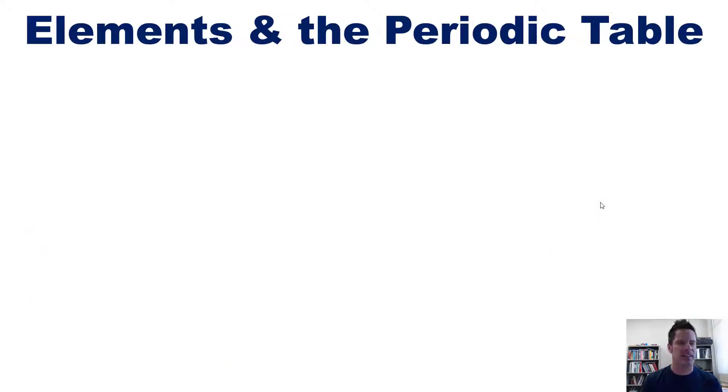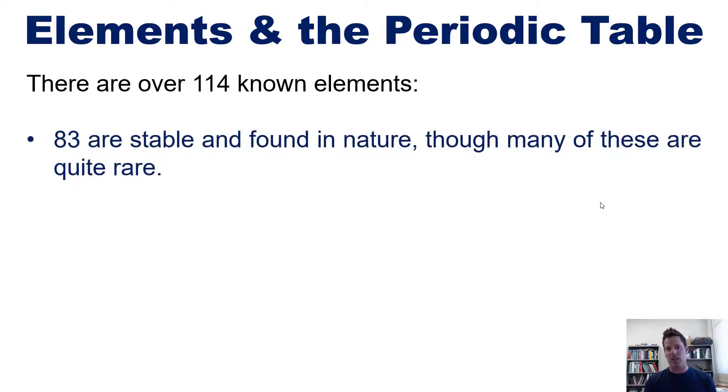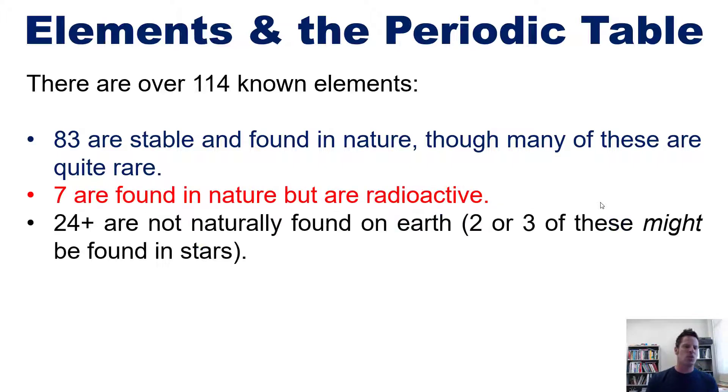Beginning with elements in the periodic table - there are over 114 known elements. 83 of these are stable and found in nature, though many are quite rare. 7 are found in nature but are radioactive, and 24+ are not naturally found on earth, though 2 or 3 of these might be found in stars.